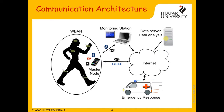Regarding communication architecture, the sensors collect the information and send it to the master node through ZigBee or Bluetooth. The master node then sends it to the internet through GSM, Wi-Fi, Bluetooth, or GPRS, and then the data reaches the server destination.